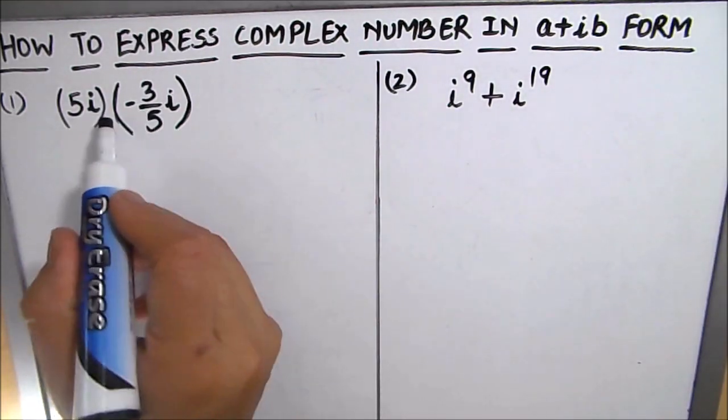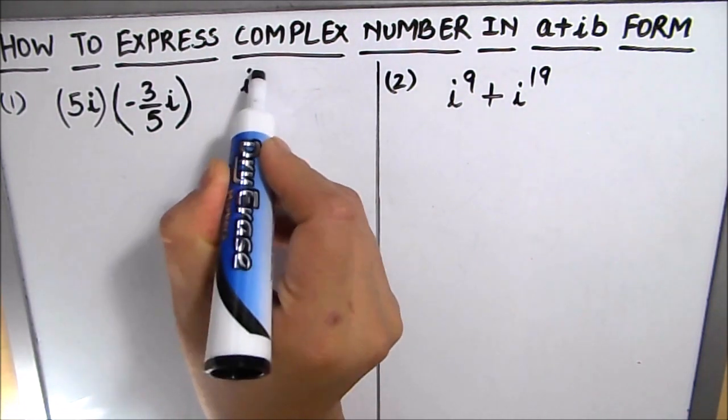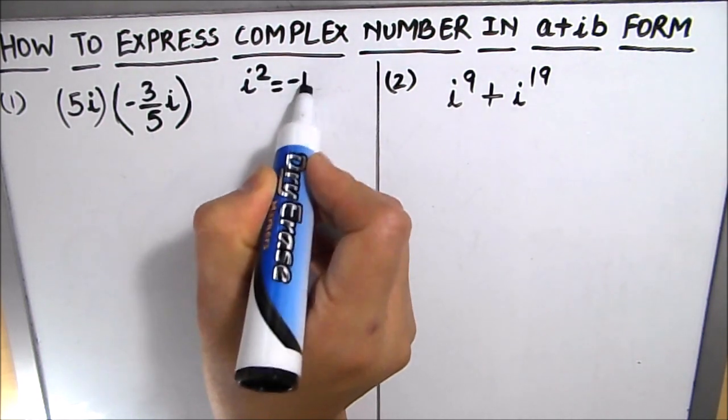You all know that this i means iota, which is an imaginary number, and iota square is equal to minus 1.